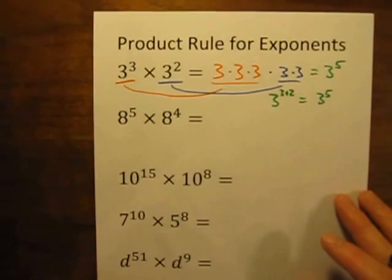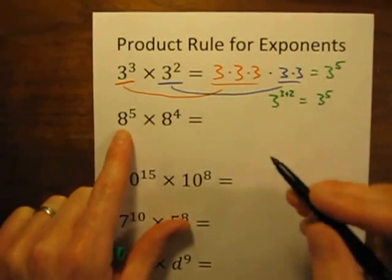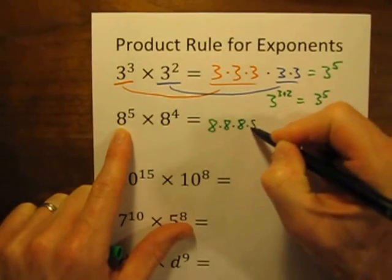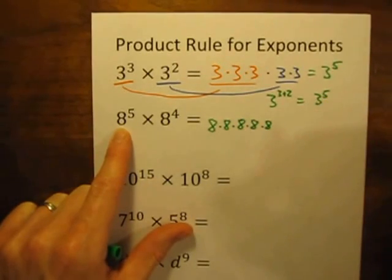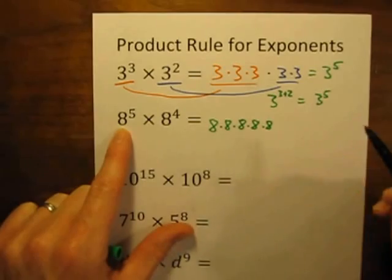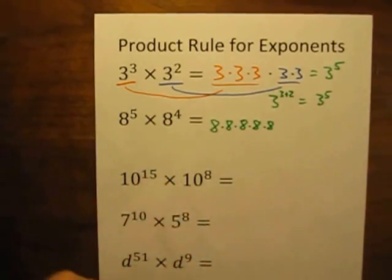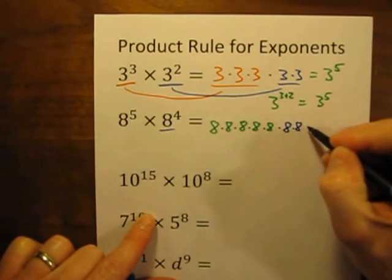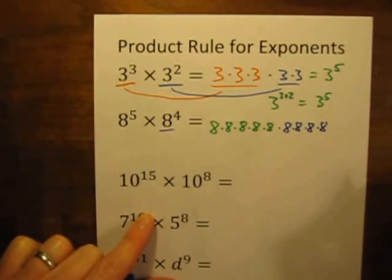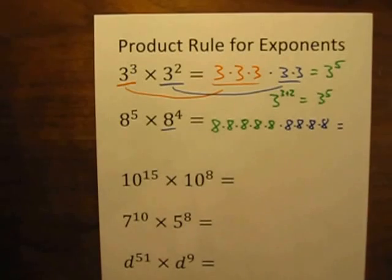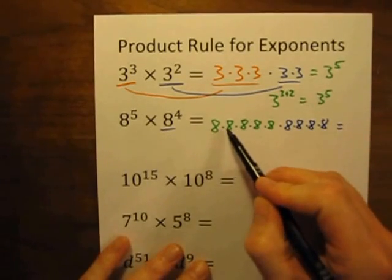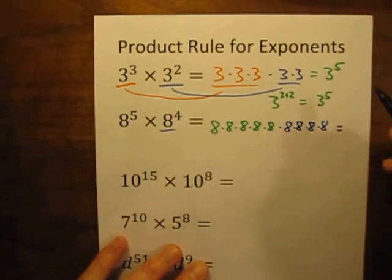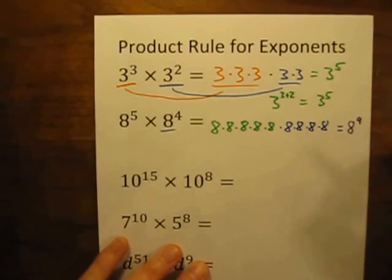So that's the product rule. If we want to do that again, we could have 8 to the 5th power: 8 times 8 times 8 times 8 times 8. And then the second part, 8 to the 4th power: times 8 times 8 times 8 times 8. So how many 8s are we multiplying together? We count 9 eights, so this is 8 to the 9th power.